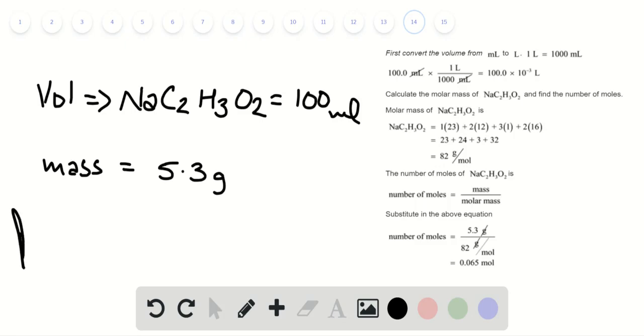Now we convert the volume from mL into liters. That turns out to be 100 multiplied by 10 raised to power negative 3 liters.